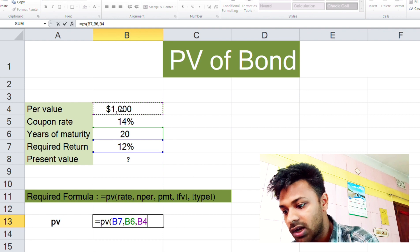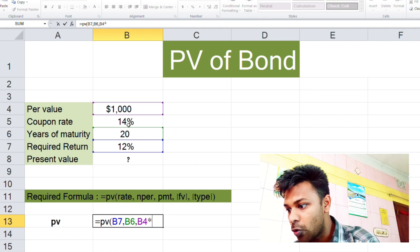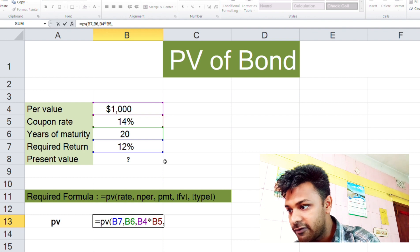The FV is 1000, comma. And the type - we don't have any type, so write down here zero.